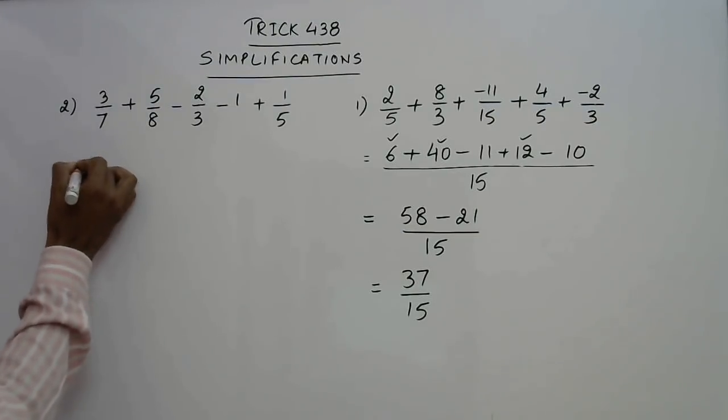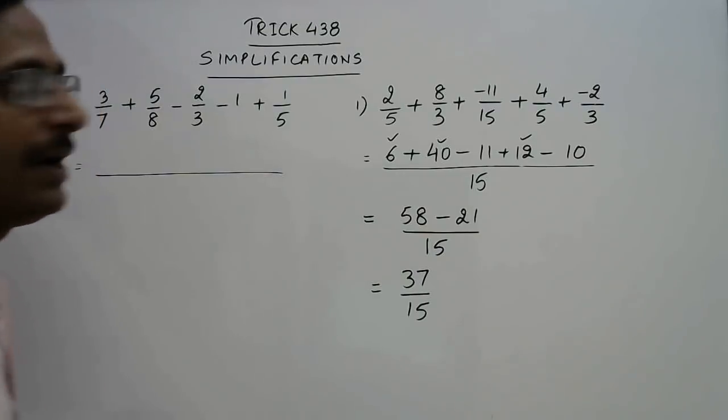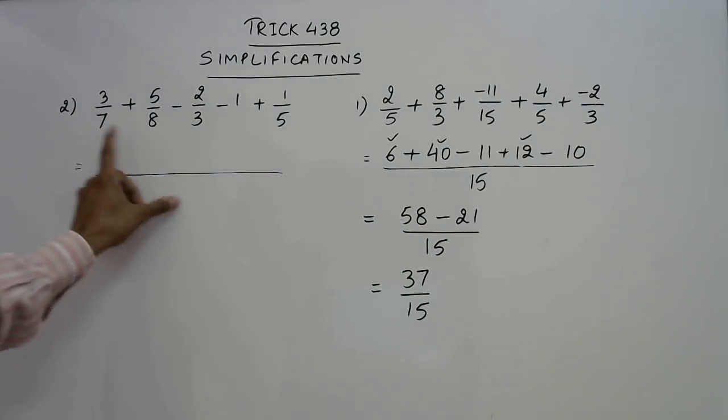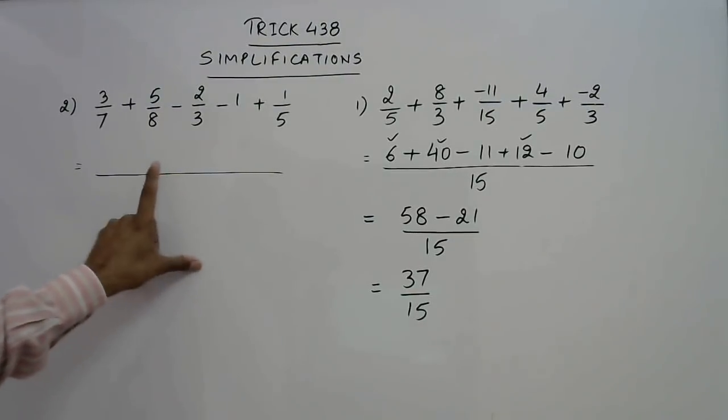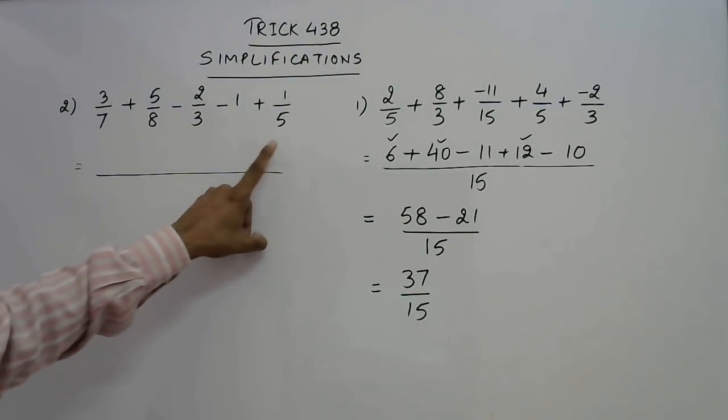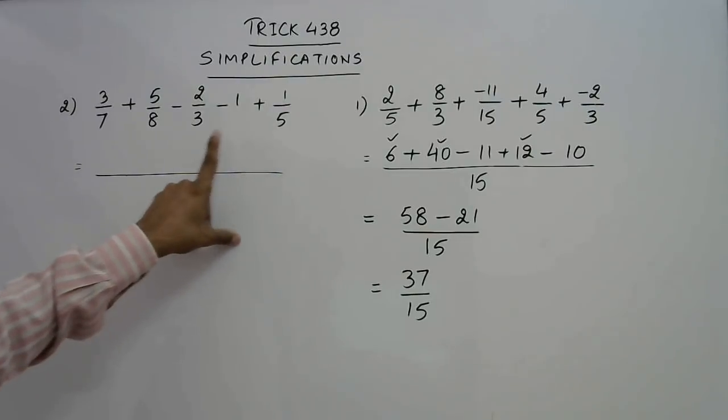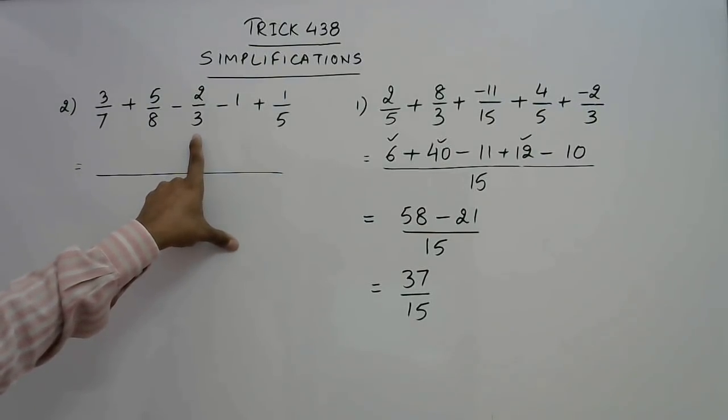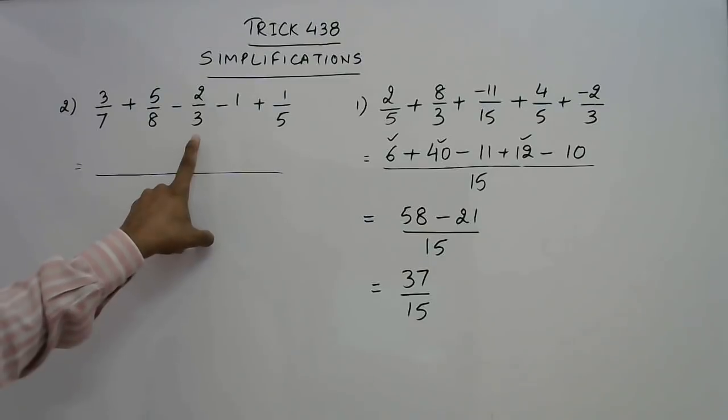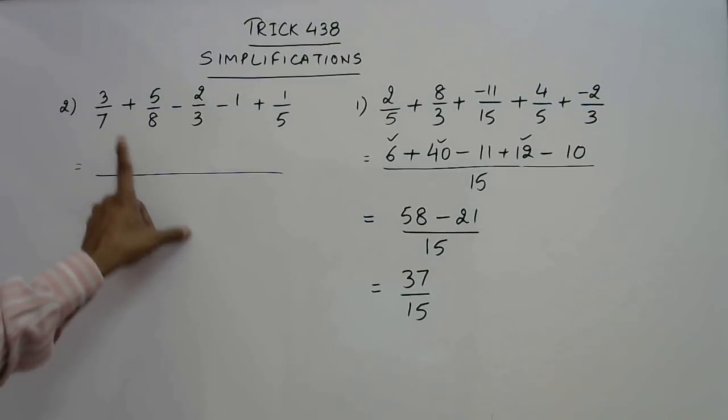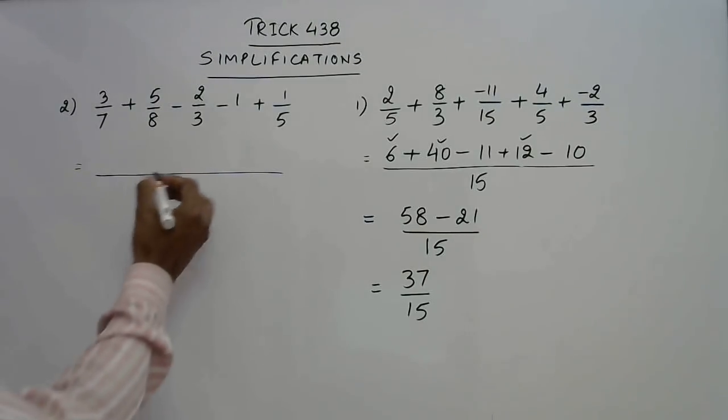So what we write here? We have to multiply the 4 denominators. Now how do we multiply the 4 denominators? We can make this very easy. See 8 into 5 that is 40. 40 into 3 is 120. So now we just need to know 12 into 7 because 120 into 7 means 12 into 7 followed by a 0. So 120 into 7 is 840 which is the LCM of this case.